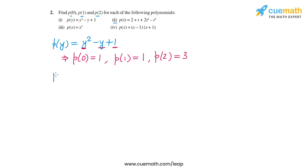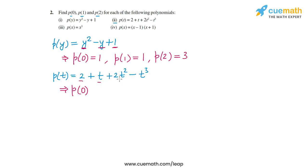Now let's calculate p(0), p(1), and p(2) for the second part: p(t) is equal to 2 plus t plus 2t squared minus t cubed. For p(0), t becomes 0, so all terms involving the variable become 0, and only the constant term remains. So p(0) equals 2. Whenever you substitute 0 into a polynomial, you can quickly write all variable terms as 0 and only keep the constant.